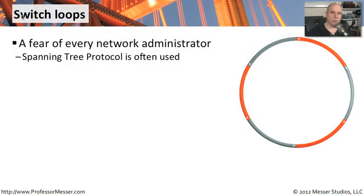If you create a loop on a switch and it's completely unchecked, you're going to have downtime. There's going to be problems associated with that. Very often when we are working with switch configurations and we're plugging in or unplugging a device, we're being very careful to make sure that we don't create a loop. Very often we're also configuring something called spanning tree protocol in the switch itself to avoid situations that might occur if we happen to accidentally create a loop somewhere in the network.